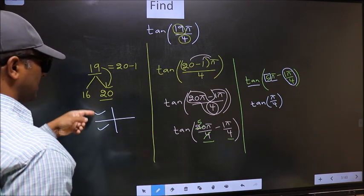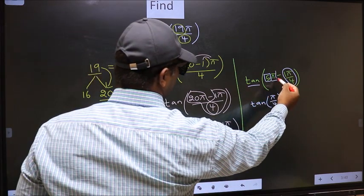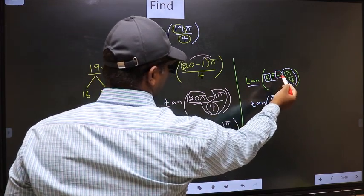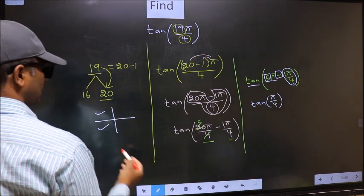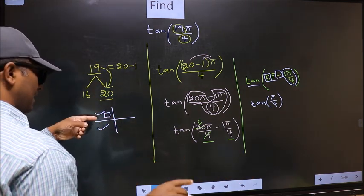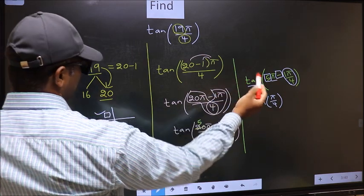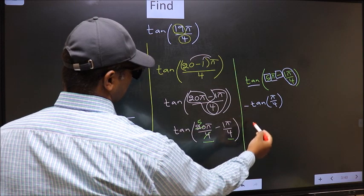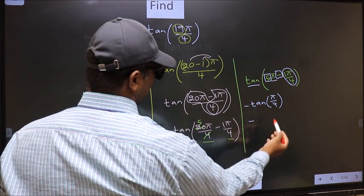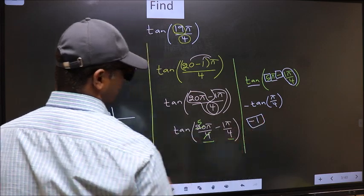So now, to select the quadrant, we should look at this symbol. Here we have negative. That means the angle lies in the second quadrant. And in the second quadrant, tan is negative. So we should put negative. So negative tan pi by 4 is 1. This is our answer.